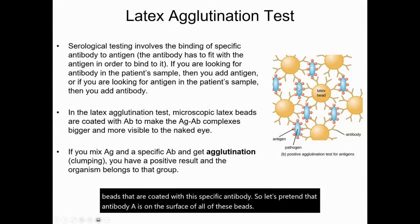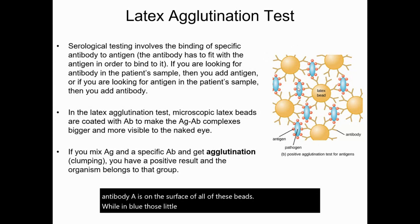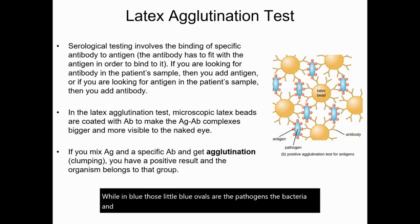In blue, those little blue ovals are the pathogens — the bacteria — and the little red circles are the antigens on their surface.